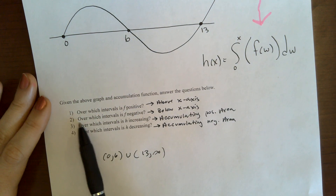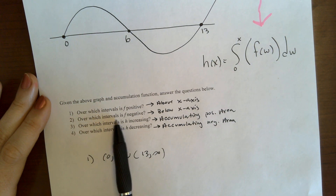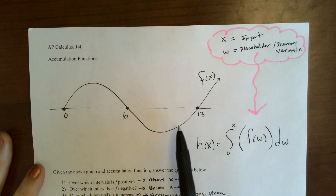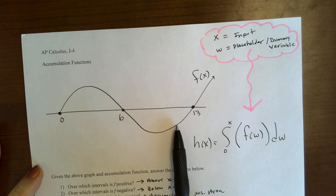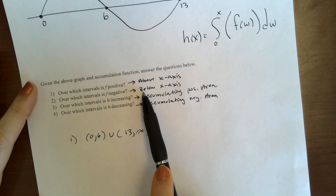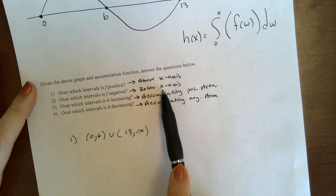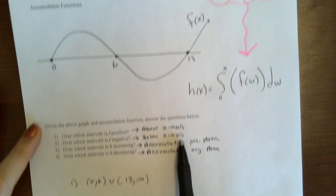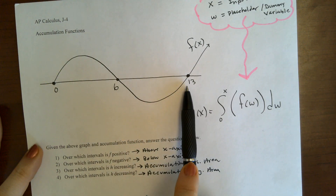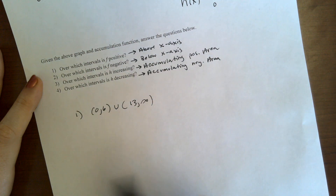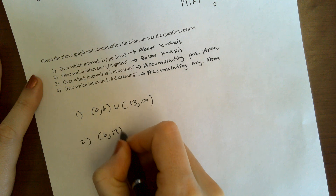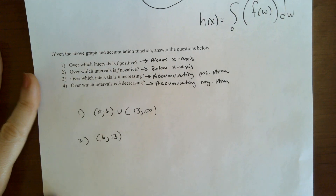Then over which intervals is f negative? This is the graph of f, so it's going to be negative wherever the graph is below the x-axis, which is from 6 to 13.